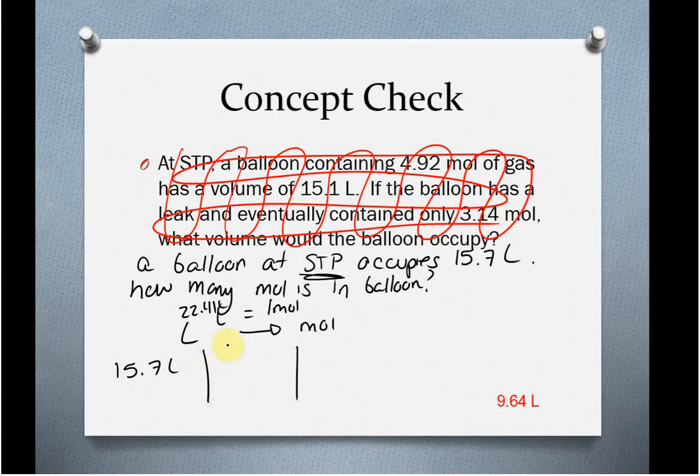Using one mole is always going to occupy 22.41 liters. So we're going to start with that 15.7 liters. And every time we have 22.41 liters, we get one mole of gas. So we have 15.7 divided by 22.41. And you get something like 0.701 moles of that gas.